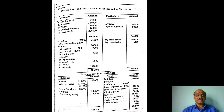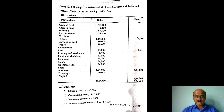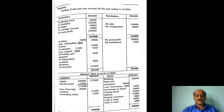Depreciation adjustment is on plant and machinery at 10%. Plant and machinery is Rs. 80,000, so depreciation is Rs. 8,000. This goes to profit and loss account debit side. Net profit is the balancing figure: Rs. 1,32,000.